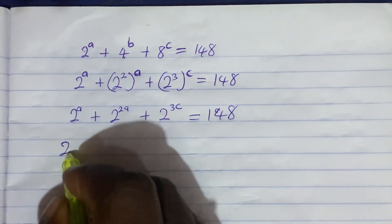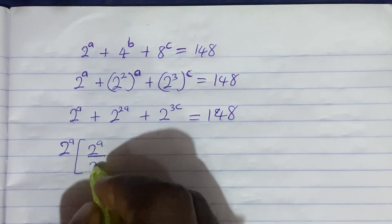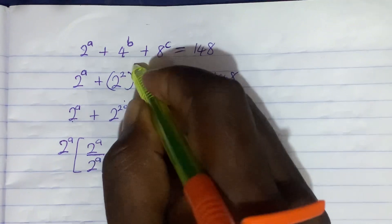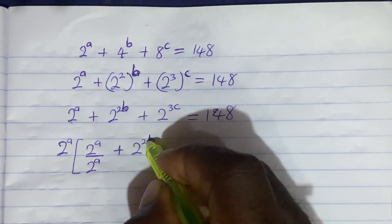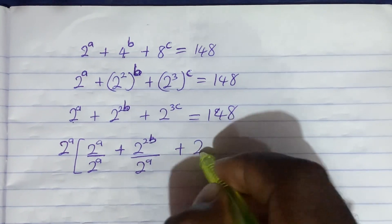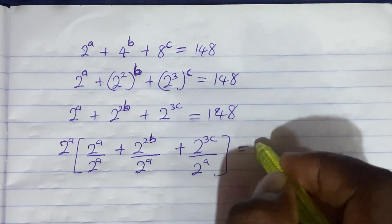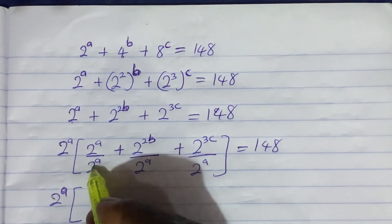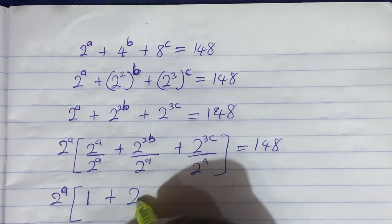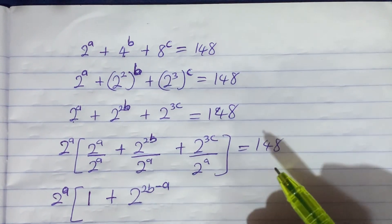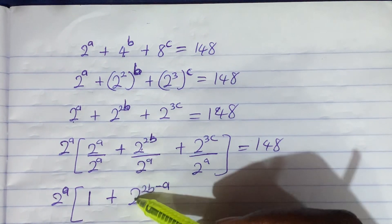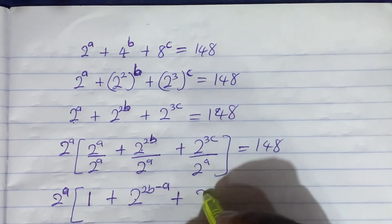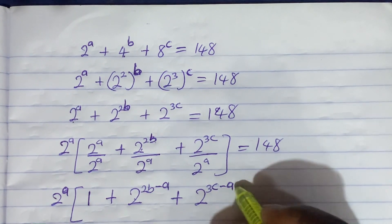Now let us factor out 2 raised to the power A. If I factor that out, I am left with 2 raised to the power A, multiplied by 1 plus 2 raised to the power 2B minus A, plus 2 raised to the power 3C minus A, equals 148. This uses the law of indices — when the bases are the same, we subtract the powers when dividing.